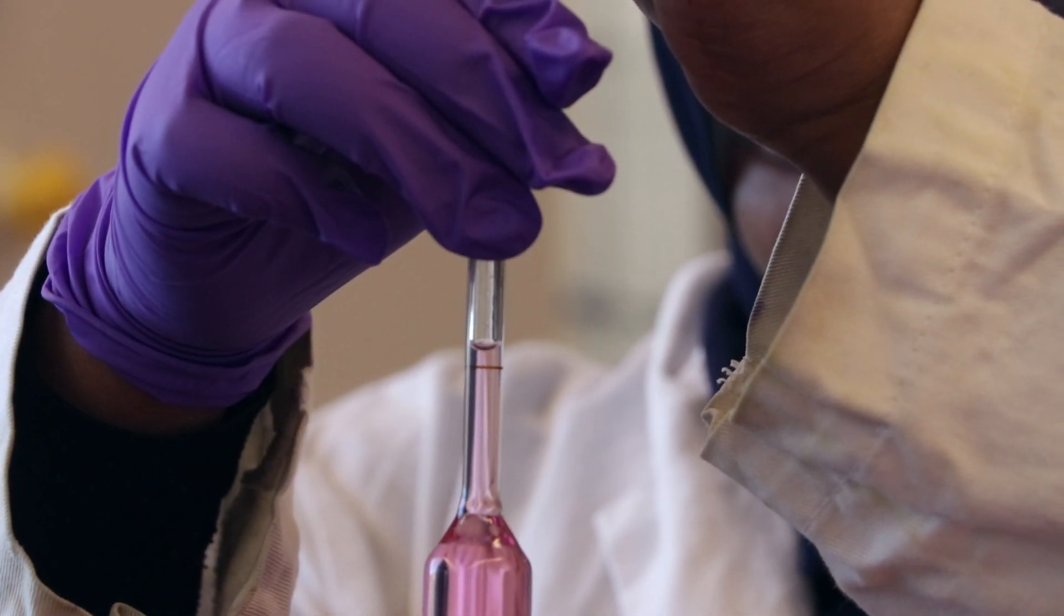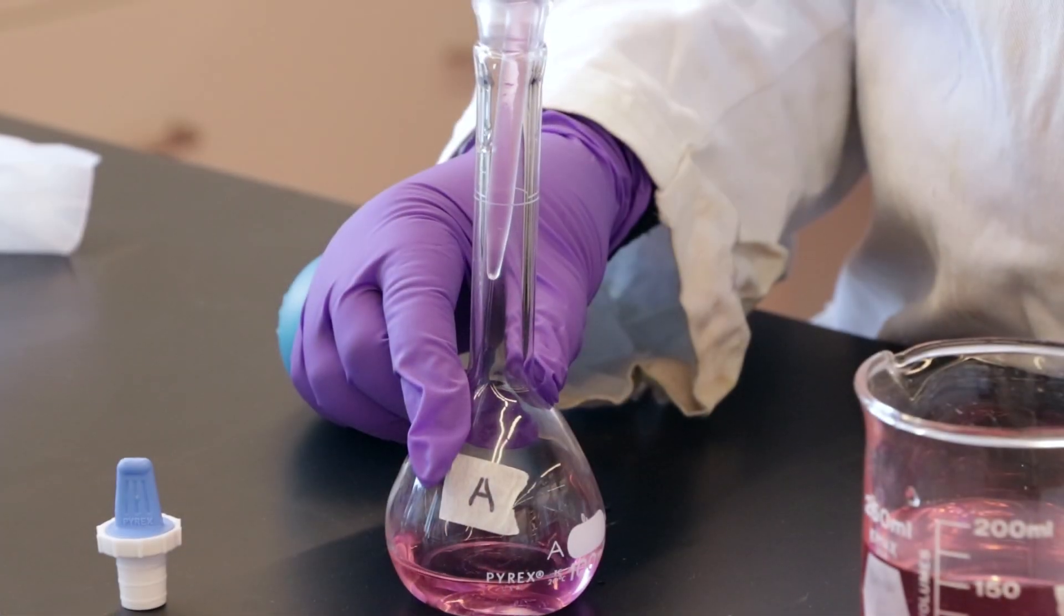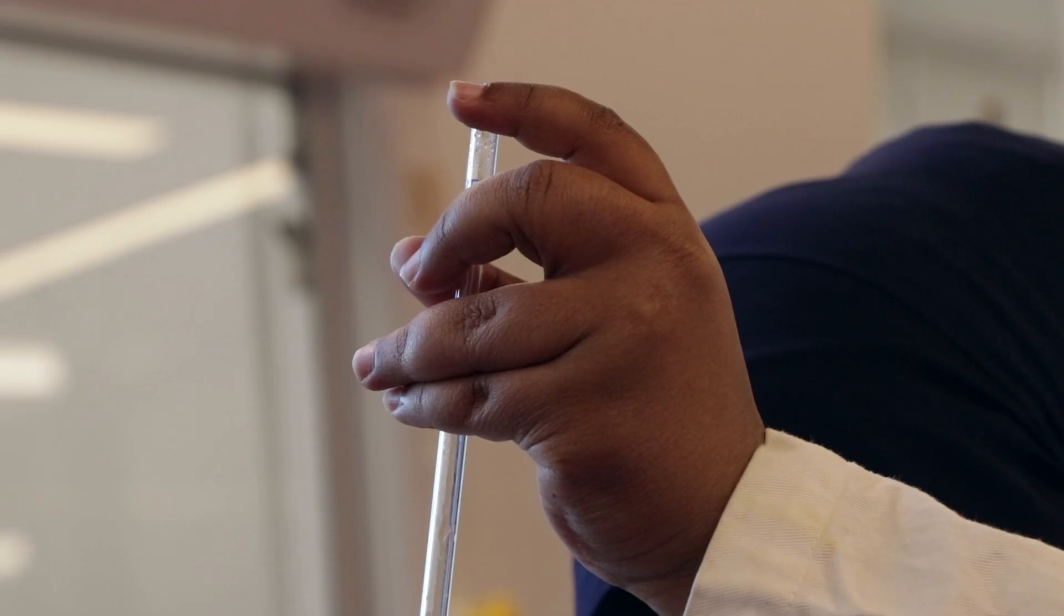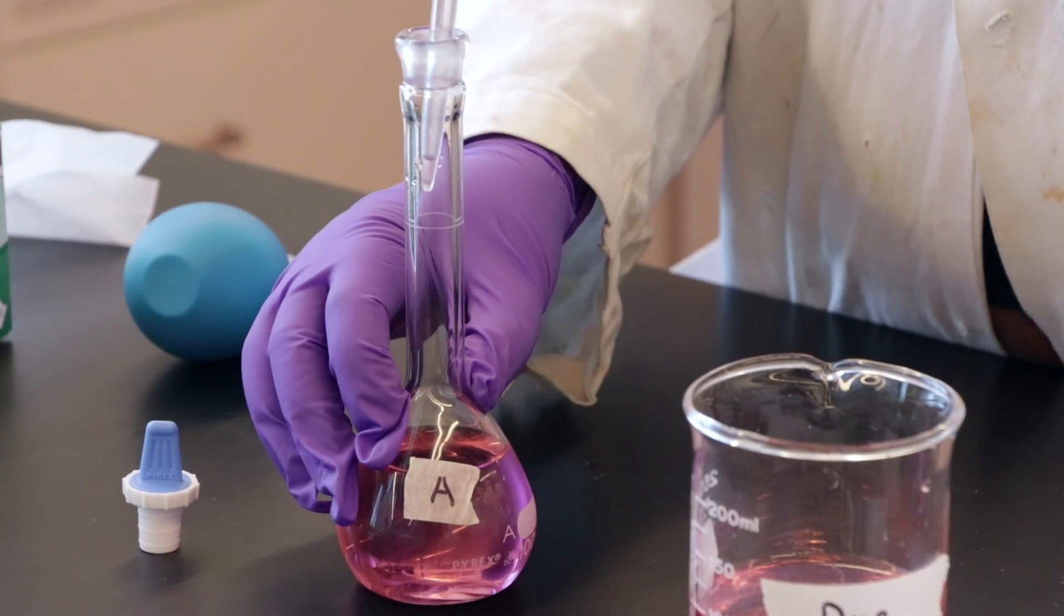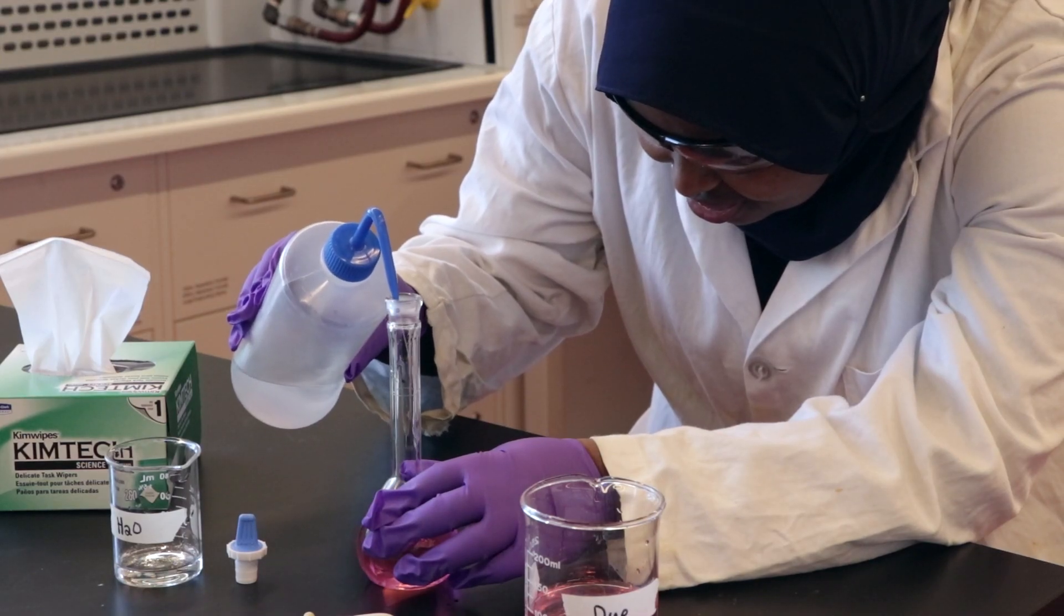Follow the link in the description below for a detailed explanation of pipetting. Once you've transferred the erythrosine B into flask A, dilute the solution to the mark with distilled water.